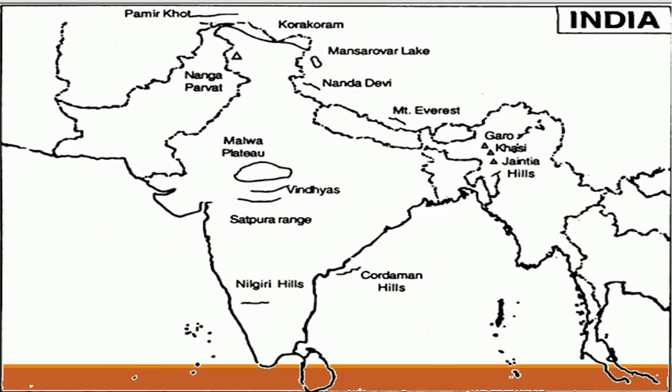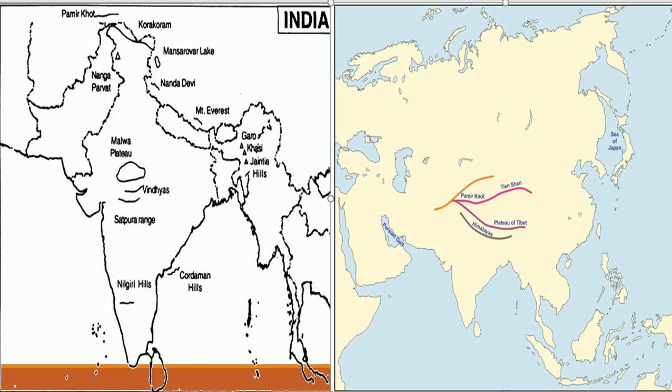Talking about the Pamir Knot — as you can see here on this map, here is the Pamir Knot. The Pamir Knot is known as the roof of the world because of its great height. It is centered in the Gorno-Badakhsha autonomous region of eastern Tajikistan. Several mountain ranges run in all directions from this knot.